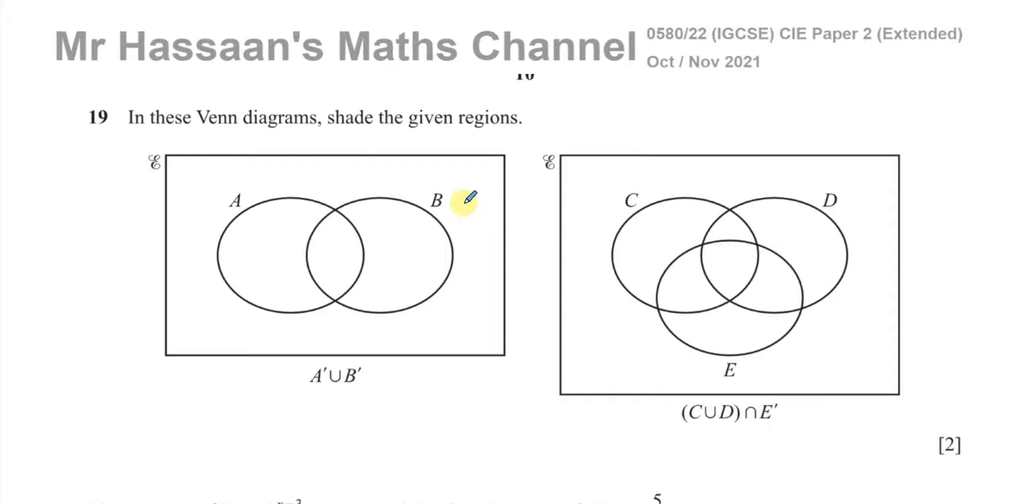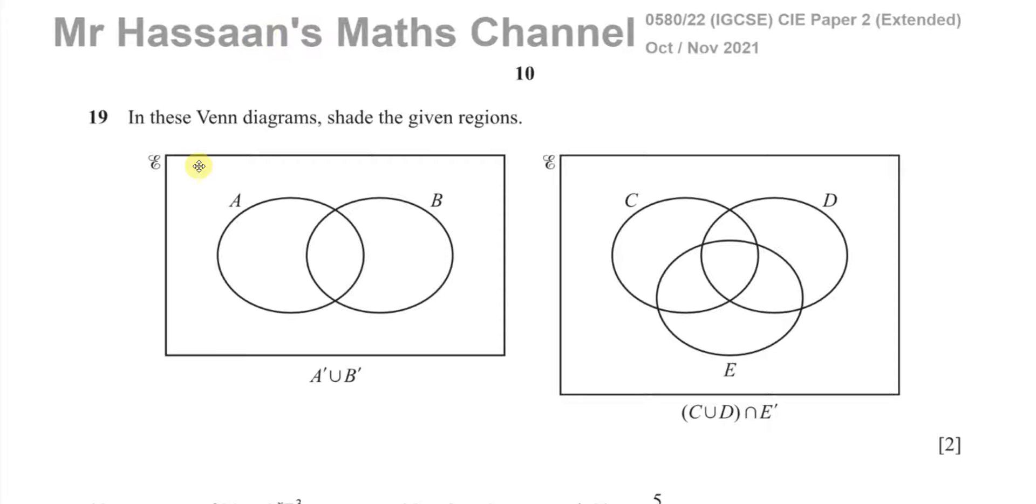Okay, welcome back. This is Mr. Hassan's Maths Channel, and this question is number 19 from the Cambridge 0580 specification, October-November 2021, paper 2, variant 2. This is about Venn diagrams, and it says, in these Venn diagrams, we want to shade the given regions.